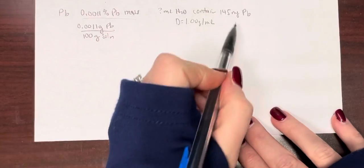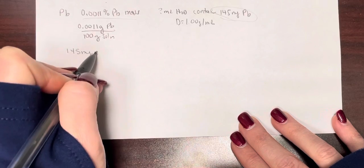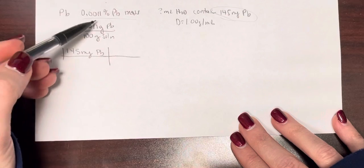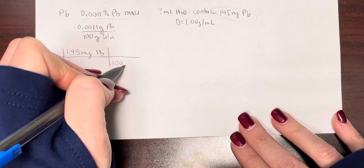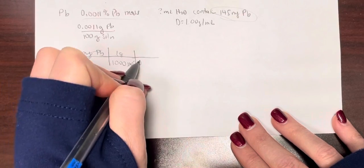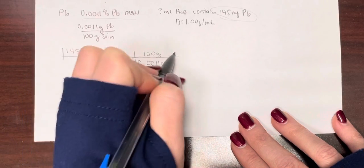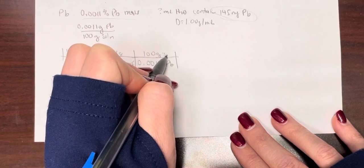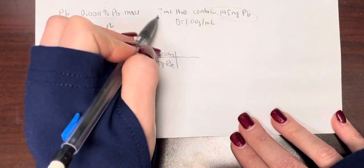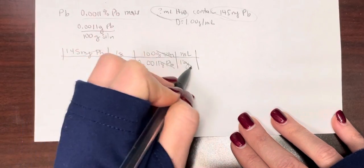Okay, so let's start with what we're asked to find. 145 milligrams—and now my mass percent's in grams, so I'm going to convert this to grams. And we know there are 0.0011 grams of lead in every 100 grams of solution. But the question is asking us to find milliliters, so let's use density here to convert to milliliters.